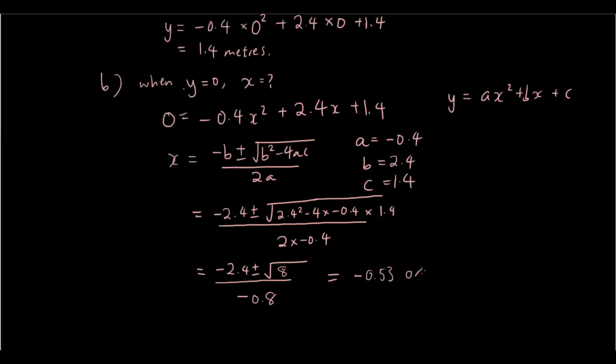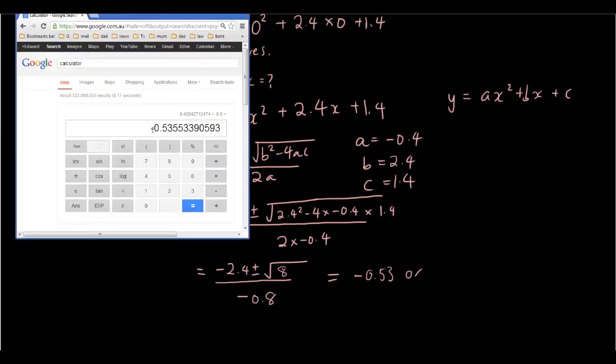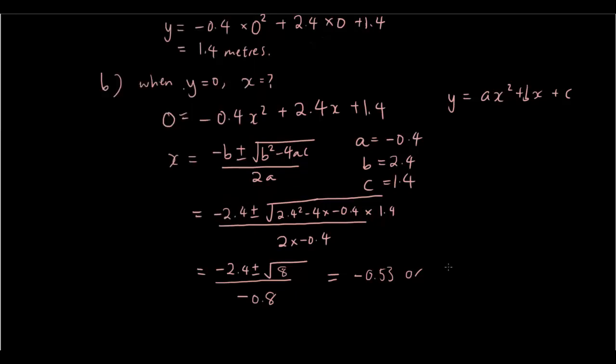And we already know that's not going to happen because well we simply can't have a negative number for the time, or we can try negative 2.4 minus the square root of 8 and then divide it by negative 0.8 and the answer is 6.53, which sounds more like it,